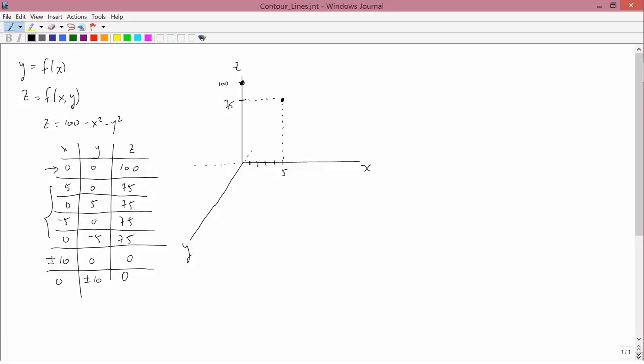The next point is, that is this one here, is x equals 0, so no units left or right. y equals 5, so 5 units towards you. 1, 2, 3, 4, 5, and 75 units up. And the way that is sketched is this way. Like so.